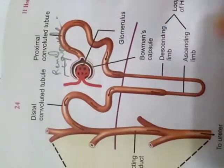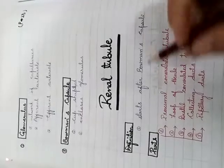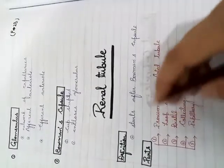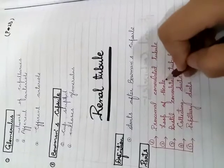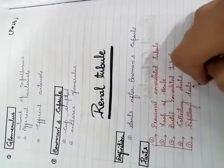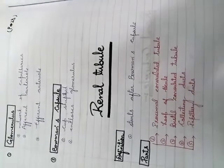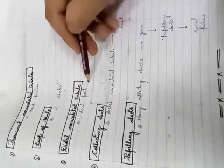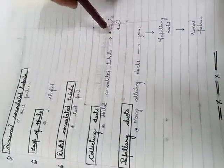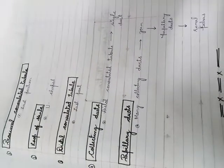Now we study the renal tubule. The renal tubule starts after the Bowman's capsule and contains the following parts: the proximal convoluted tubule, the loop of Henle, the distal convoluted tubule, collecting ducts, and papillary ducts. The collecting ducts are single ducts; the papillary ducts are made up of many collecting ducts joining together.